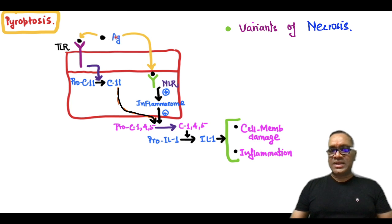What happens in pyroptosis? Antigens are combining with either toll-like receptor on the membrane or NOD-like receptor within the cytoplasm. So when antigen combines with toll-like receptor, this will activate procaspase 11 into caspase 11. And when antigen comes and combines with NOD-like receptor, this will activate inflammasome.